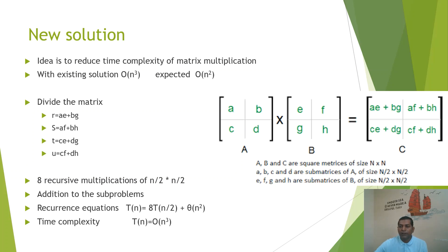The second element of the resultant matrix is AF + BH, the third element is CE + BG, and the fourth element is CF + DH. This is the resultant matrix.